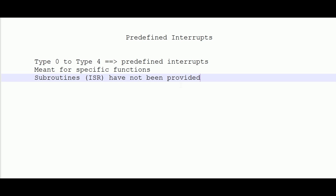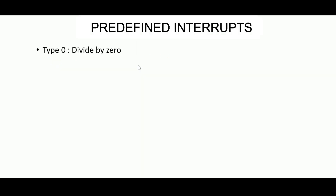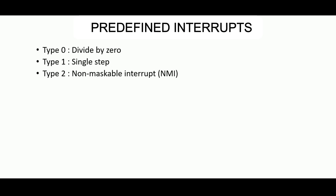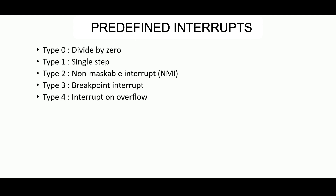What are the various functions from type 0 to type 4? Type 0 is divide by zero, type 1 is single step interrupt, type 2 is the non-maskable interrupt (NMI) — a hardware pin in 8086 — type 3 is breakpoint interrupt, and type 4 is interrupt on overflow. These are the five predefined interrupts.